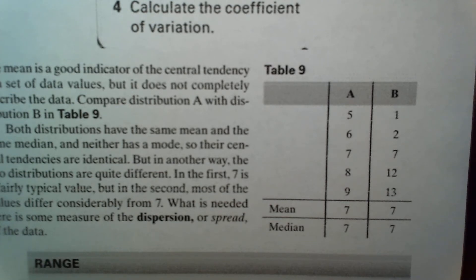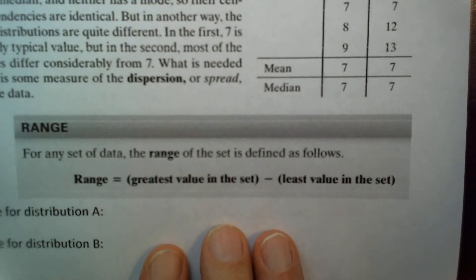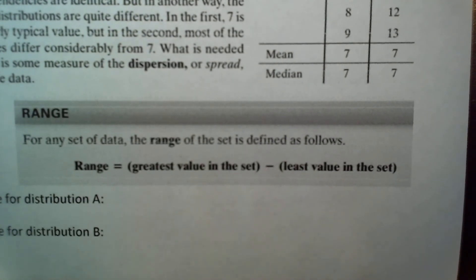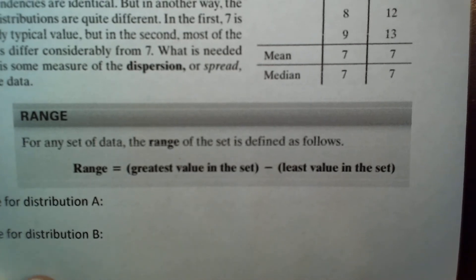If you look at it superficially, data set B goes from 1 to 13, so there's a difference of 12. Data set A goes from 5 to 9, which is simply a difference of 4. So that is one of the measures of dispersion — we call that the range of a data set. For any set of data, the range is defined as the greatest value in the set minus the least value in the data set.